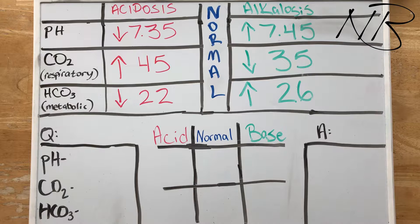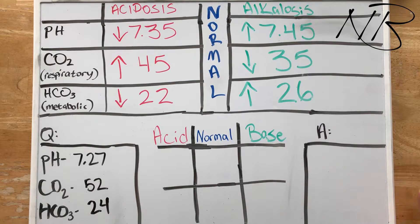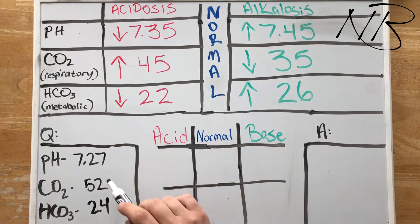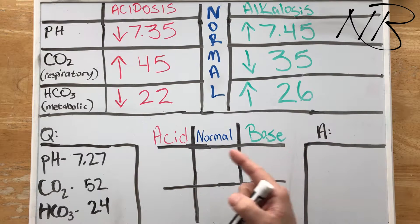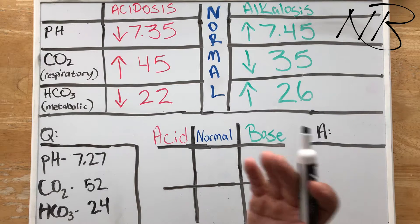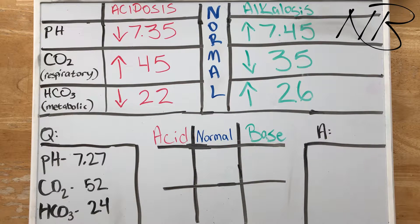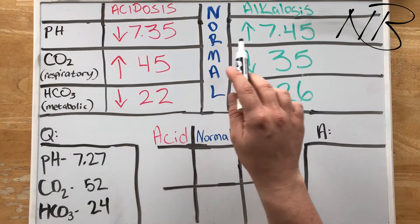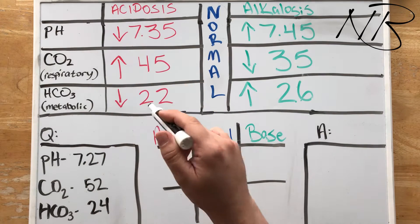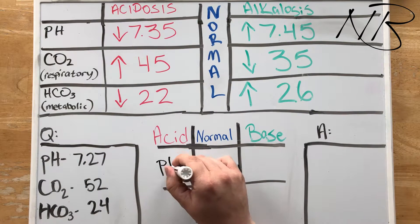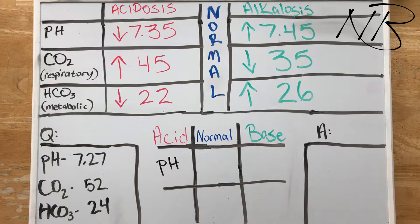Our very first test question tells us that our blood pH is 7.27, CO2 is 52, and our bicarbonate is 24. Remember the first thing that we look at is our blood pH to tell us whether we're acidotic or alkalotic. So our pH is 7.27, looking at our chart here we know that we are below 7.35, so our pH is in the acid column.